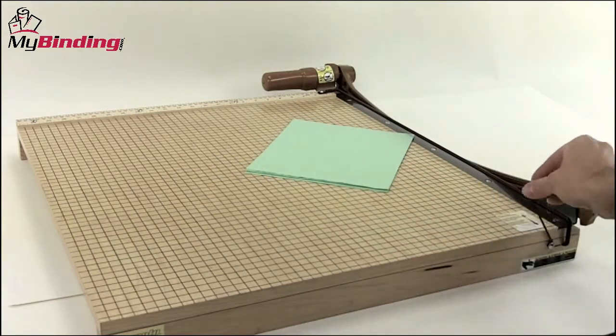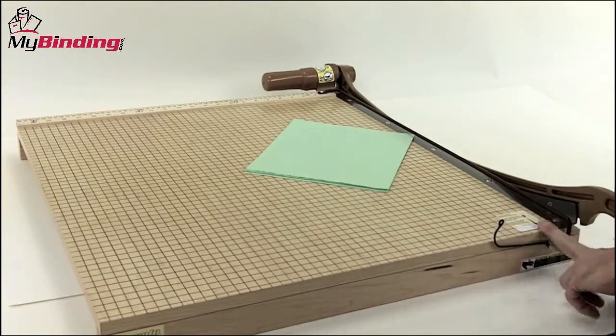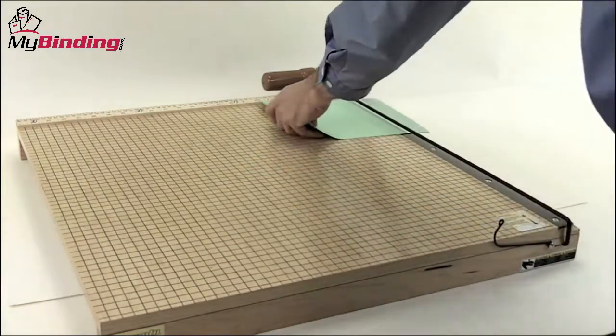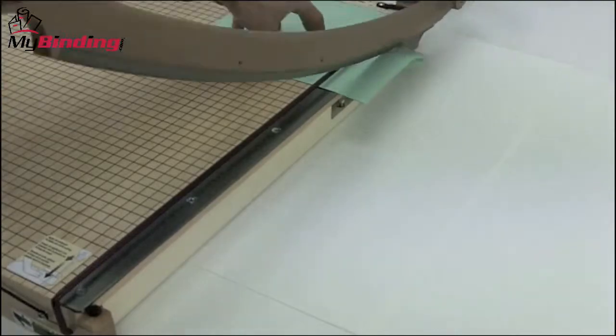Here's how it works. Simply remove the safety wire from the blade, raise the blade, and place your papers according to the measurements you need. Then the fun part: make the cut.